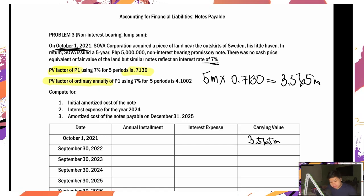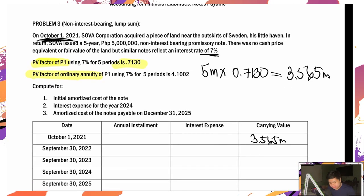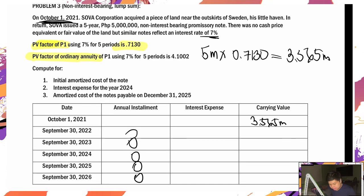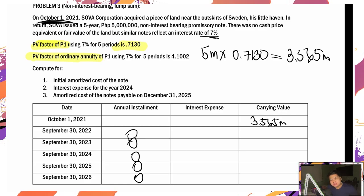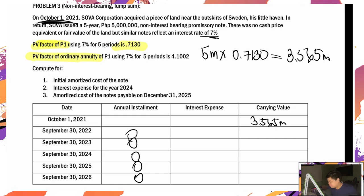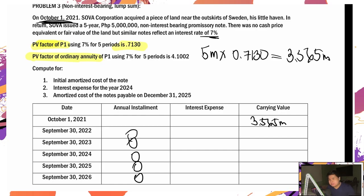Ano yung nominal rate? Wala sinabi — wala. So pwede ko bang sabihin 0? Oo, 0 to lahat. Nominal interest rate: 0%. Kasi kahit anong gawin mo, lahat ng non-interest bearing note laging naka-discount. No matter what happens, basta non-interest bearing, lagi siyang naka-discount. Never kang makakita ng ganyan na naka-premium.